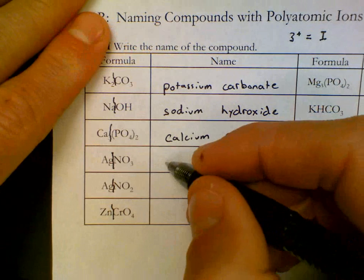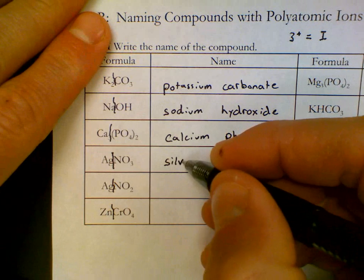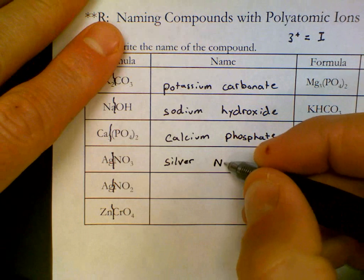Ag is called silver. NO₃ is called nitrate.